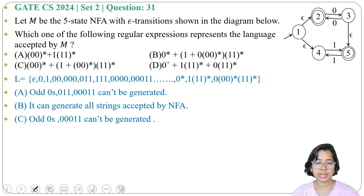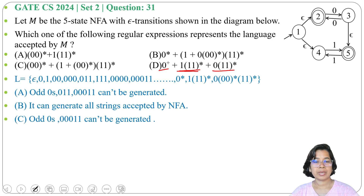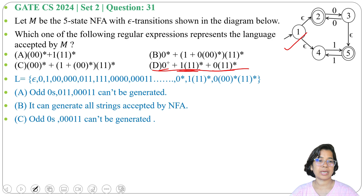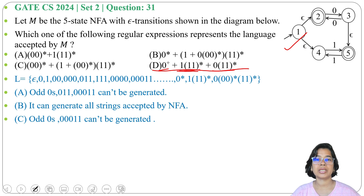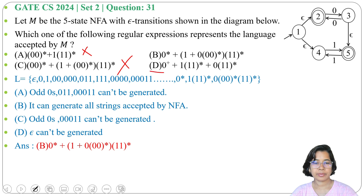Next, option D: here 0 plus means minimum one 0, then any number of 0s plus 1 1 1 whole Kleene closure, so it will generate odd number of 1s. Plus 0 then 1 1 whole Kleene closure, generating 0 followed by even number of 1s. First of all, it will not generate epsilon — minimum string will be either 0 or 1 — but this epsilon NFA also accepts epsilon. Since it is not generating the minimum string epsilon, option D is not the regular expression. So option A and option C cannot generate odd number of 0s, whereas option D cannot generate the minimum string epsilon. The answer is option B.